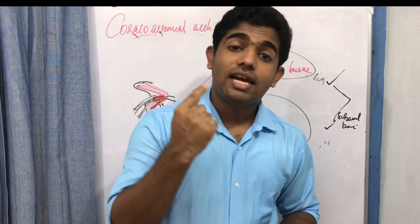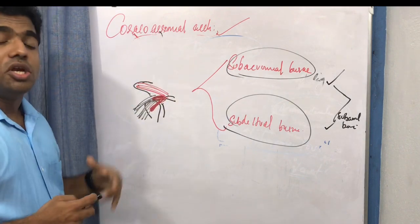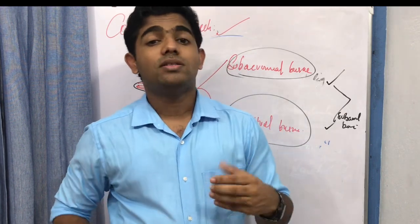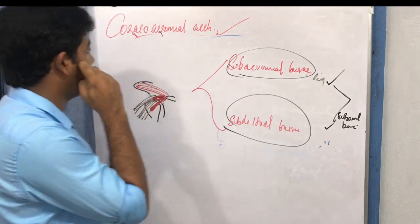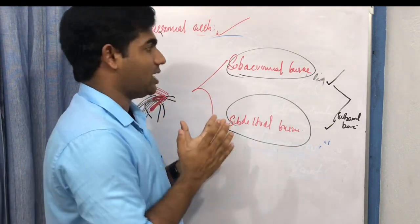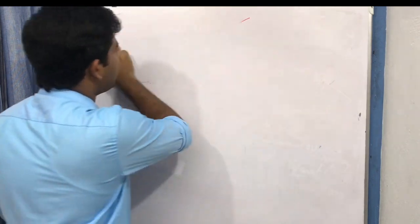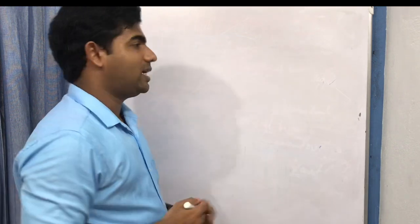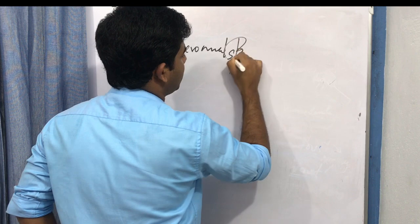One of the most commonly impinged structures with the coracoacromial arch is the supraspinatus muscle. Supraspinatus tendonitis can result in subacromial bursitis or expansion of the subacromial bursa. Now moving to the third concept: the subacromial space. All three concepts are interrelated — within the coracoacromial arch we have the subacromial space and bursa.